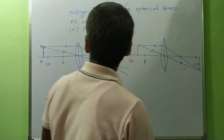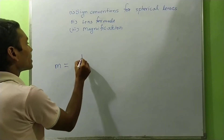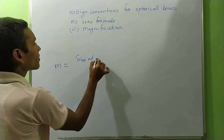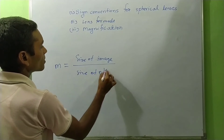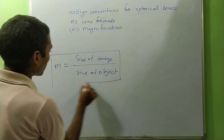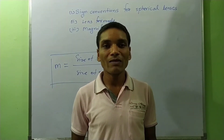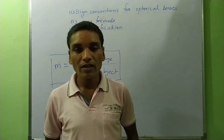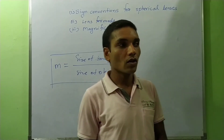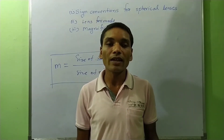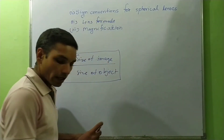Magnification of a lens is denoted by small m and is defined as the ratio of the size of the image to the size of the object. This is also called linear magnification. We will now derive the formula for the magnification of a lens, and find its sign for convex and concave lenses.